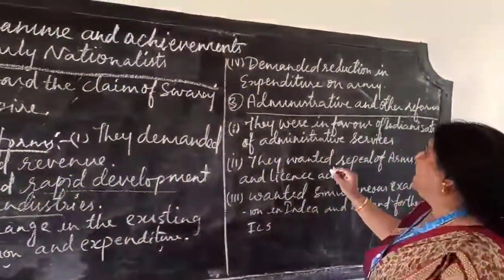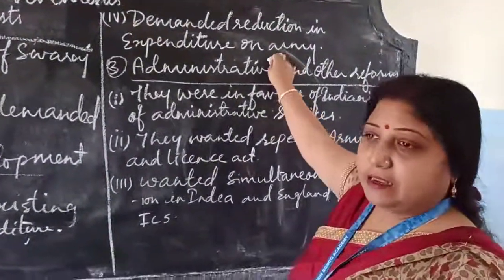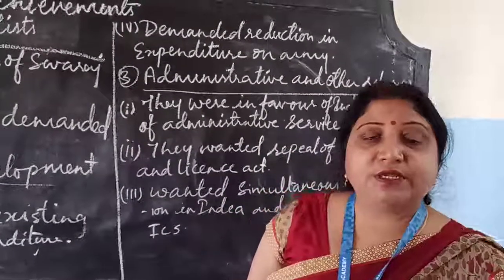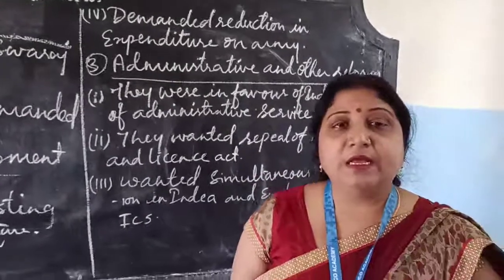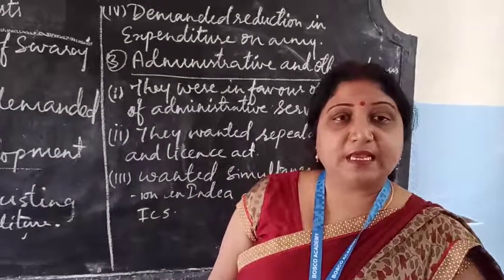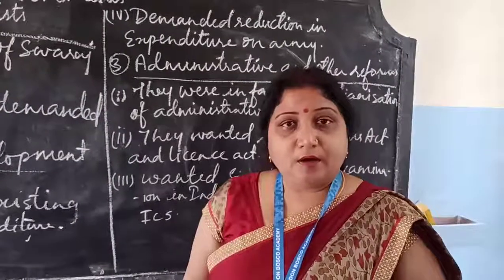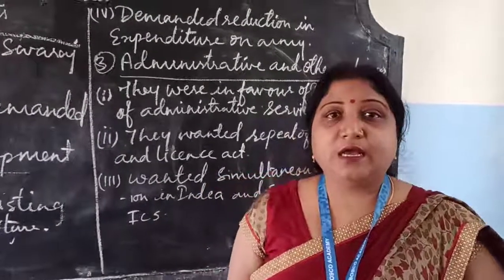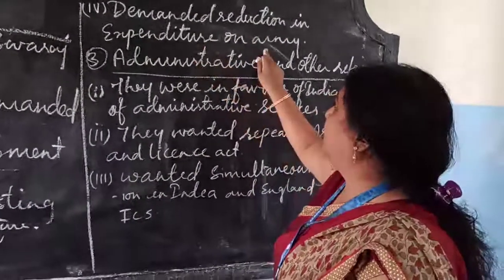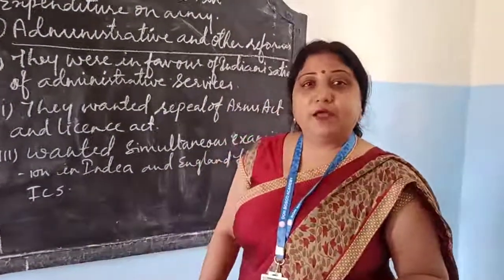They demanded reduction in the expenditure on the army. After the revolt of 1857, expenditure by the British government on the army had increased. So the moderates demanded reduction in army expenditure and use of that money for the welfare of the people.